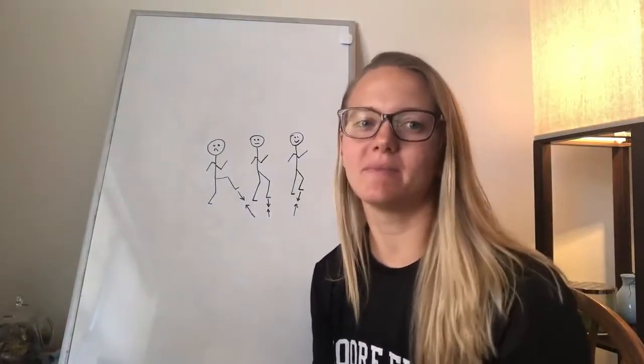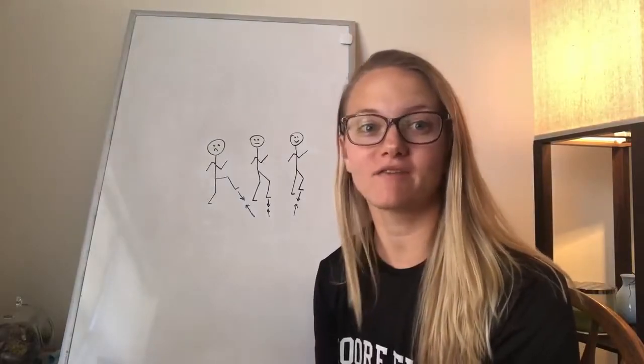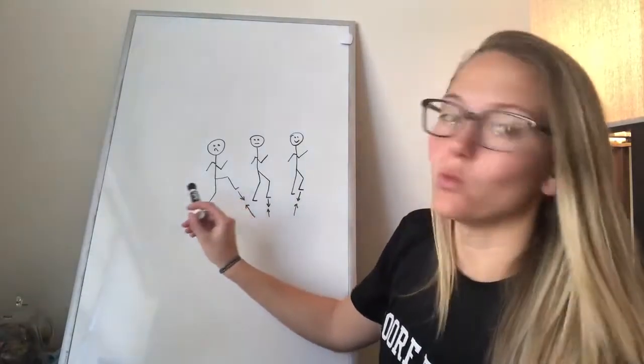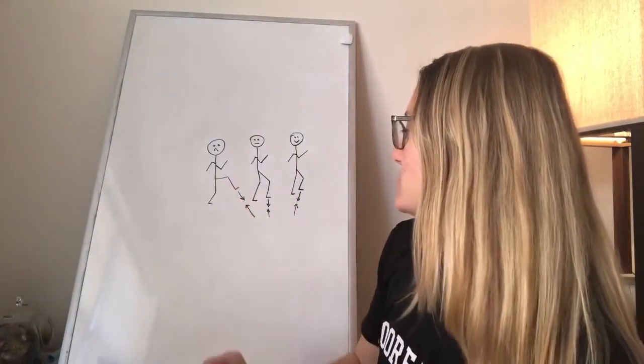So when you overstride, that means you're coming down with your foot way in front of your hips. And you can see that this foot is way in front of this guy's hips over here.